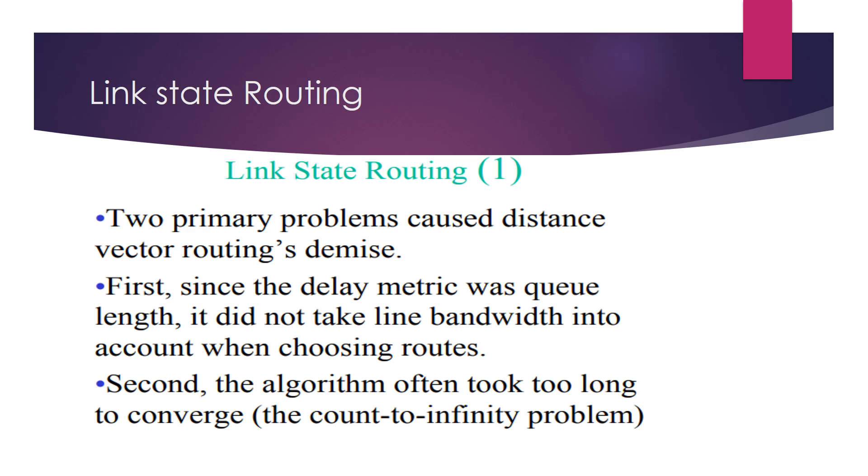There are two primary problems that caused distance vector routing's demise. First, since the delay metric was queue length, it did not take line bandwidth into account when choosing routes. Second, the algorithm often took too long to converge, the count-to-infinity problem. In our previous discussion of distance vector routing, we already illustrated this problem and how after a number of exchanges, this estimation process creates this particular problem.